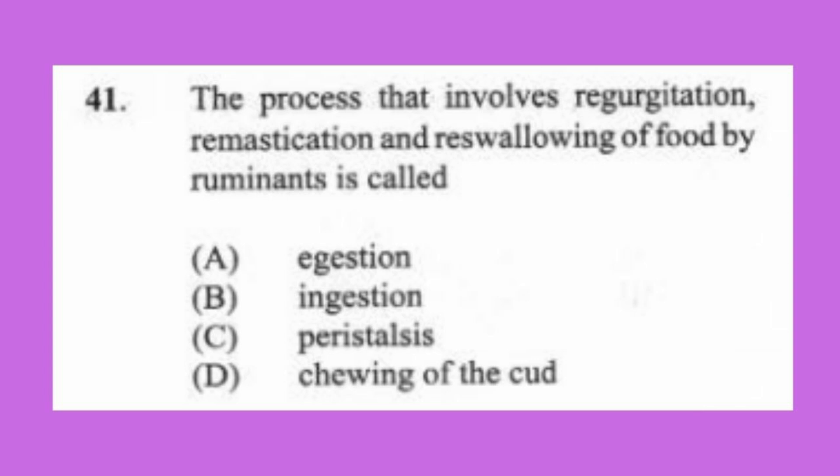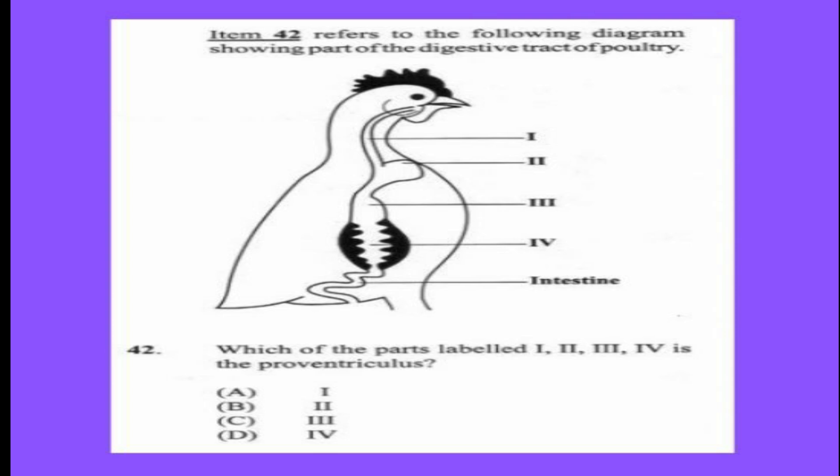Question 41: The process that involves regurgitation, remastication, and re-swallowing of food by ruminants is called (a) ingestion, (b) digestion, (c) peristalsis, (d) chewing of the cud. The answer is D, chewing of the cud. When a goat or cow chews its cud, it is bringing food back up from the rumen — called regurgitation — then chewing it again and re-swallowing.